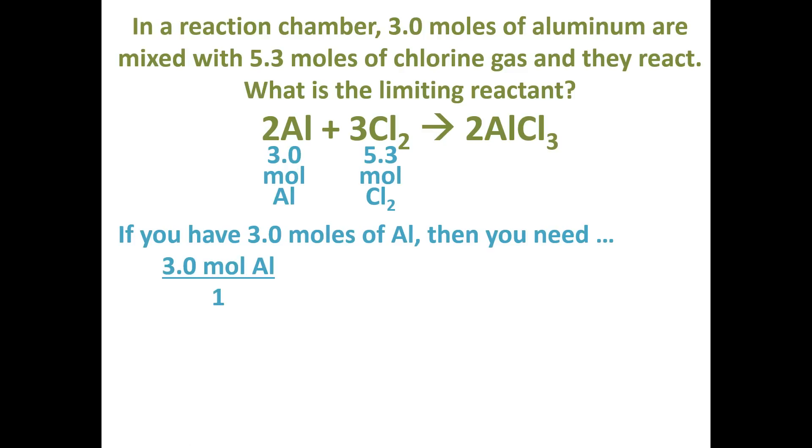Then we're going to do a mole to mole ratio between the two reactants. There are 2 moles of aluminum versus 3 moles of chlorine gas. And so we want to make sure our moles of aluminum cancel out diagonally, like so.